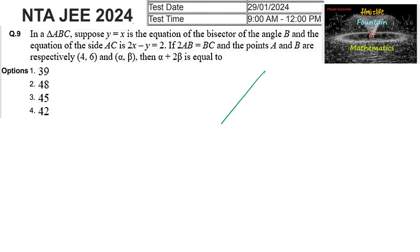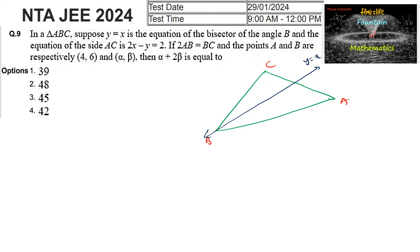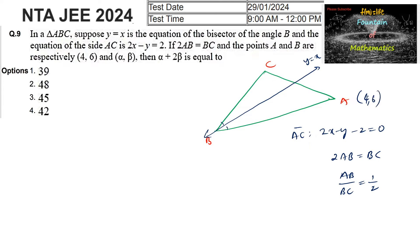In triangle ABC, y = x is the bisector of angle B. The equation of side AC is 2x - y - 2 = 0, and 2 times AB is equal to BC, that is AB upon BC = 1/2. The points A and B are respectively A = (4, 6) and B = (α, β). Then what is the sum α + 2β?